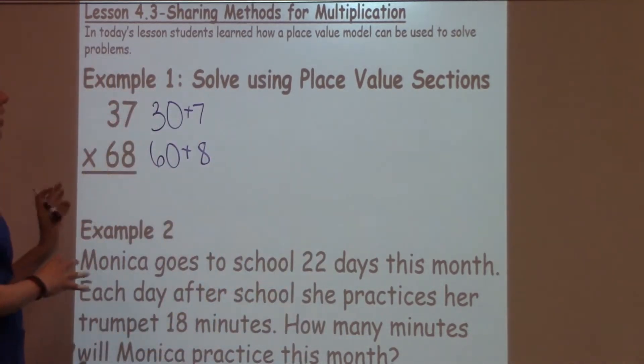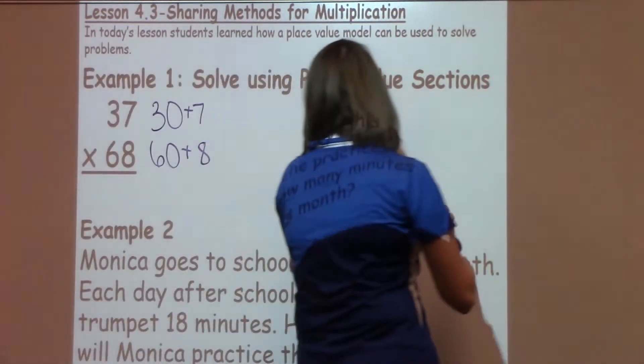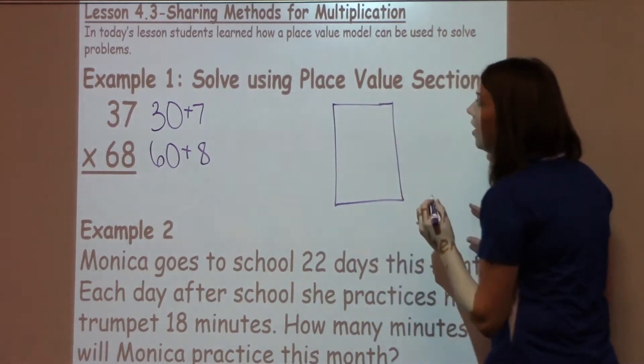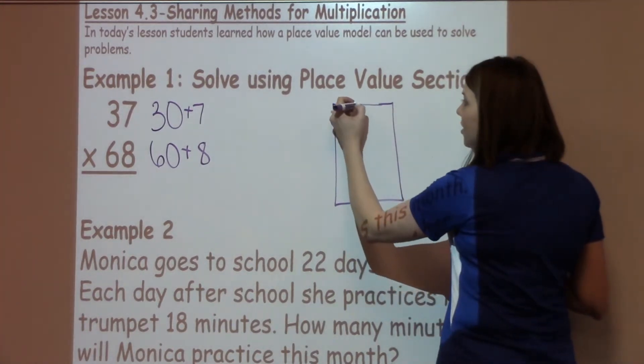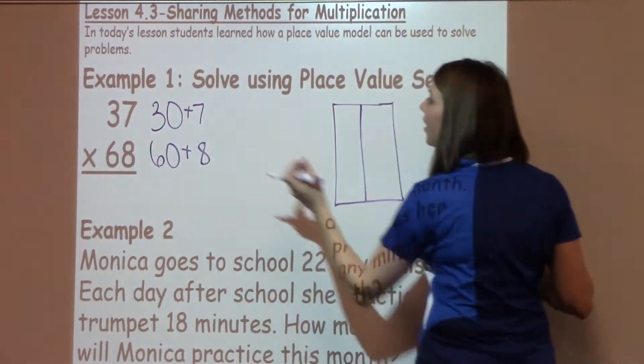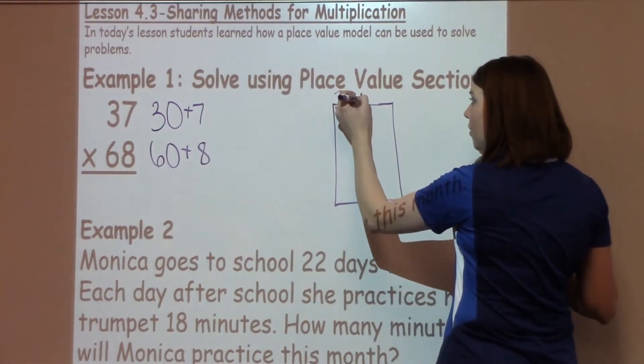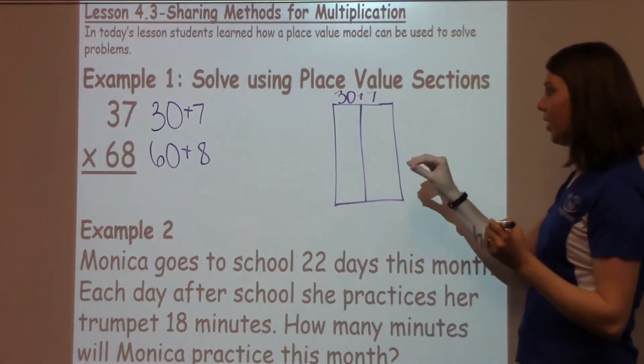We're going to use this in the application of the problem when we do place value sections. The very first thing I'm going to do is draw a box, which is going to be my organizer for this problem. I'm going to divide my box in half, and I'll write my very first number, expanded out. So I'm going to write 30 plus my 7 over here. I have my 30 and my 7 in the first part of my box.